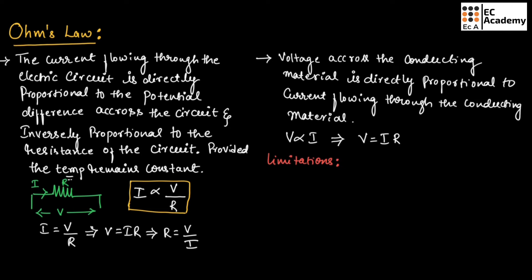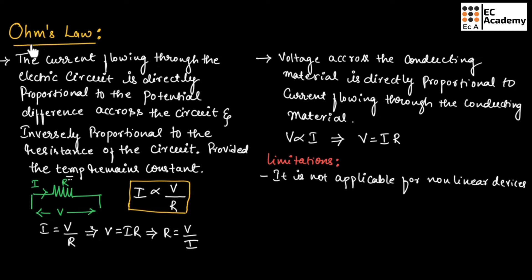There are a few limitations of Ohm's law. The first limitation is that it is not applicable for non-linear devices. Since Ohm's law is applicable only for linear devices, it is not applicable for non-linear devices such as diodes and Zener diodes.